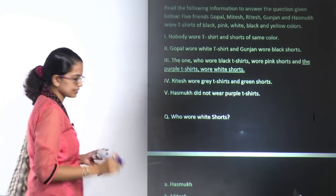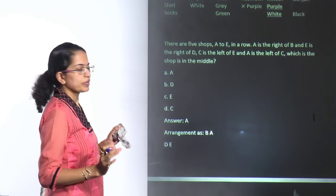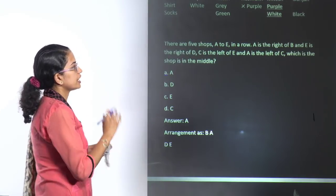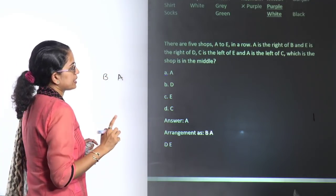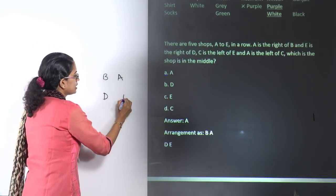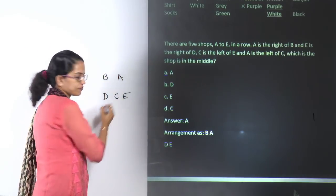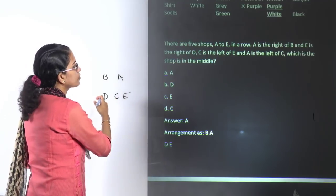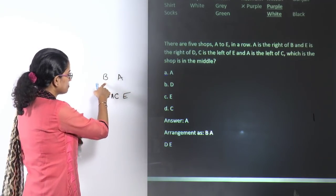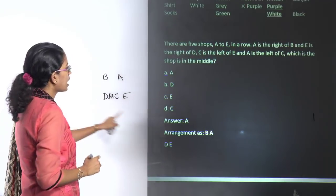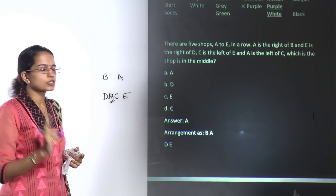The next question involves five shops A to E in a row. A is to the right of B. E is to the right of D. C is to the left of E. A is to the left of C. And B is to the left of A. Arranging these, the order becomes B, A, C, D, E — so A is in the middle.